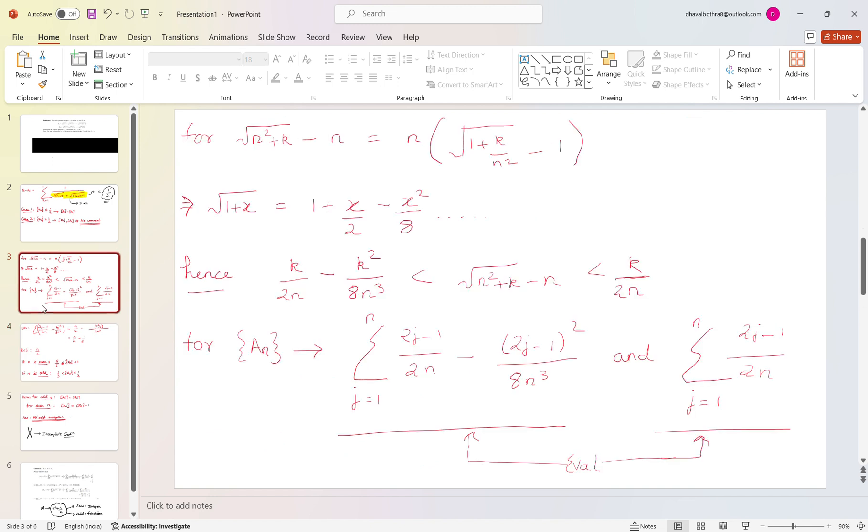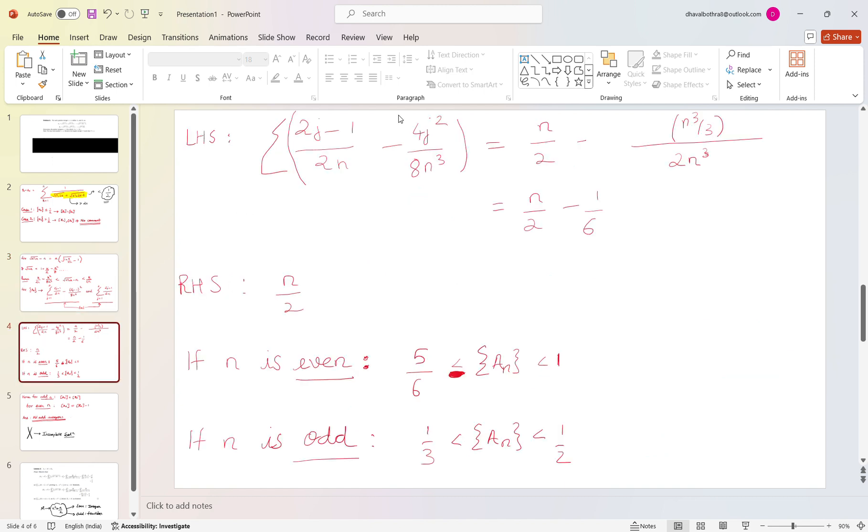Now while summing these 2j minus 1 squared thing I was a bit lazy, so what I did was, say you expand this, you will get 4j squared minus 4j plus 1. Now what we need to find is the lower limit, so let's just take the biggest term. So I just took 4j squared because I am trying to lower the lower limit further.